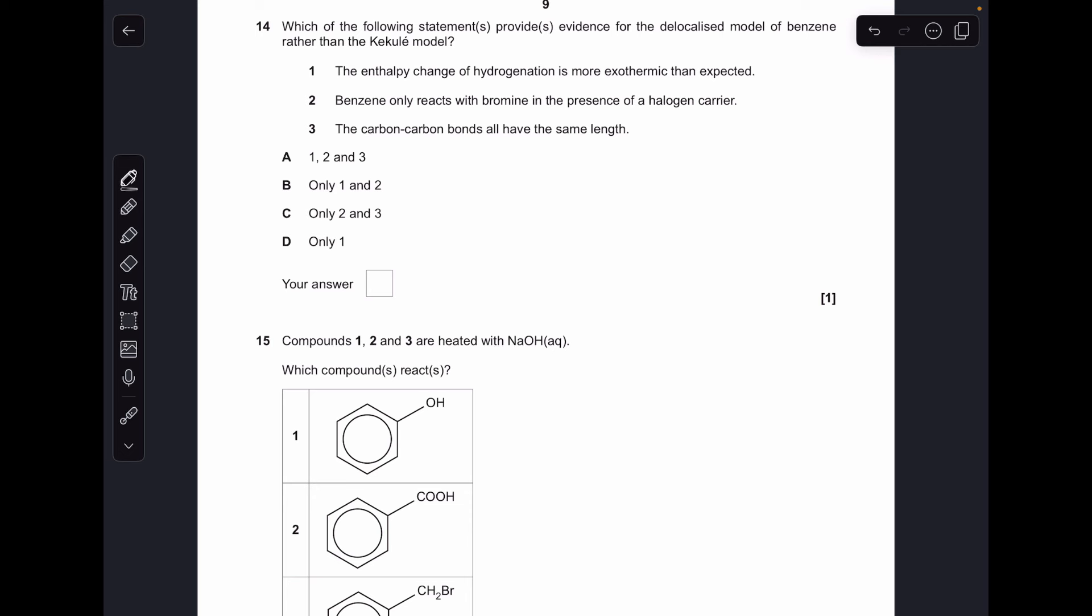Number fourteen. Let's just test to see which of these statements are correct. The enthalpy change of hydrogenation is more exothermic than expected. That's not right because it's less exothermic than expected. Benzene only reacts with bromine in the presence of halogen carrier. That's correct. And the carbon-carbon bonds all have the same length is also correct. So two and three only. C.